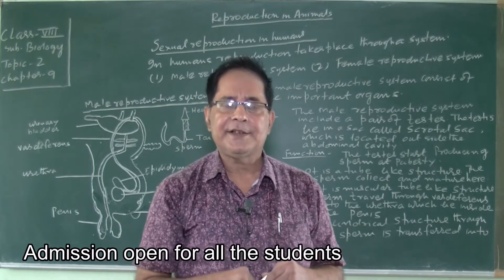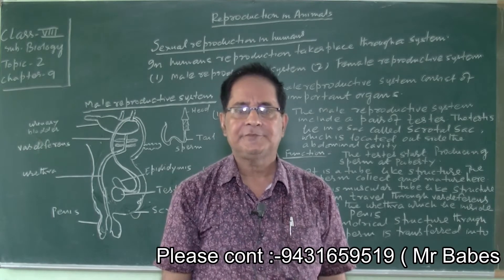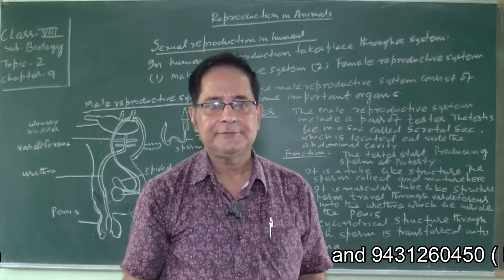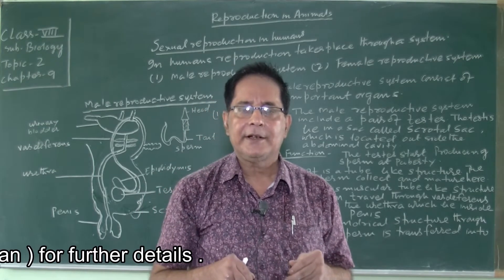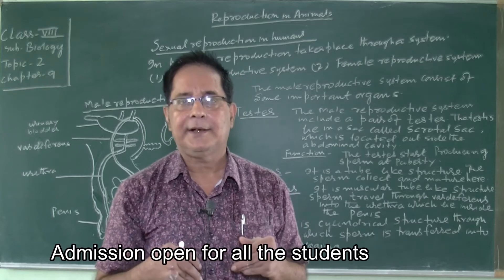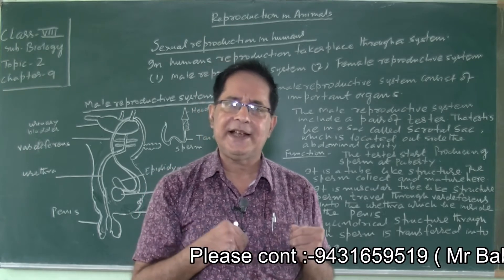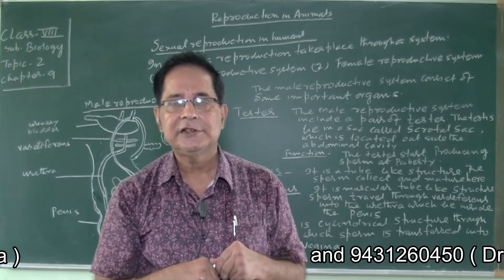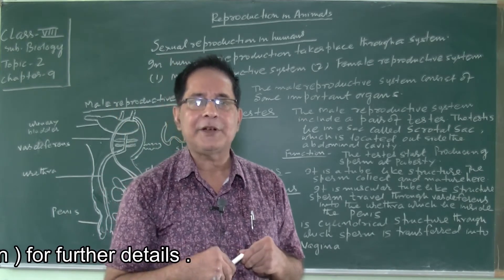In humans, reproduction takes place by a system. We have a complete system in our body for reproduction. All the systems in male and female are equal, but the reproductive system is different in male and different in female. So today we will first discuss about the male reproductive system.